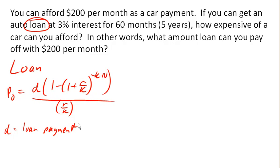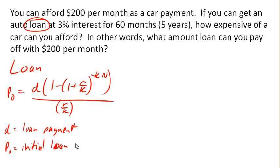Let's break this down. P0 is the initial loan amount. So what is the initial loan amount in this case? Well, we don't know — that's what we're looking for: how much of a loan can we afford. So we don't know P0 here.